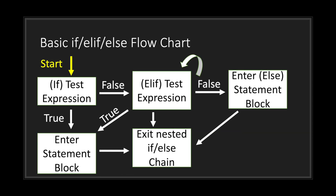Let's take a look at the flowchart for the basic if-else-if-else statement. We start at the top and enter the if test expression. If it's true, we execute that block. If it's false, we move into the else if test expression. If that comes out true, we enter its statement block and exit the chain. If it's false, we move on to the next else if test expression. If all else if expressions come out false, we enter the else statement block, execute everything inside, and exit the chain.